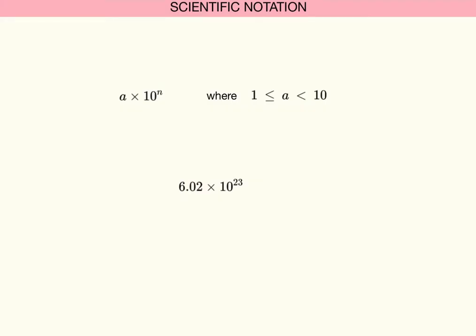Scientific notation refers to numbers that take the form a times 10 to the n, where a is known as the coefficient and 10 to the n is known as the power term. It is important to note that a cannot be less than 1, but a must be less than 10.